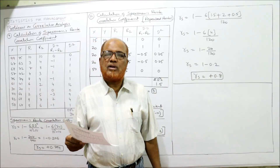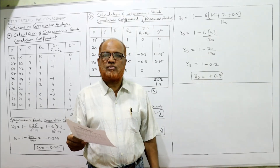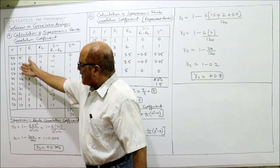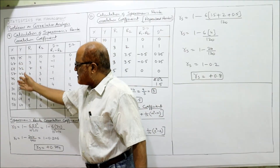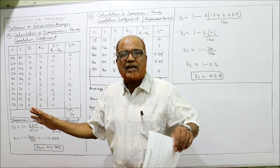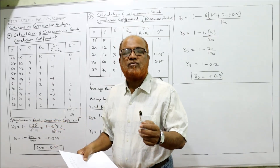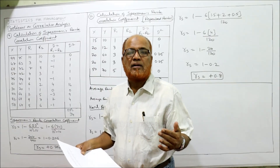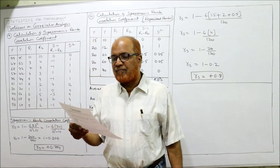But the new point is we have repeated ranks here. In the previous problem, every value was unique with no repetition. But in the tenth problem, some values are the same. X values are 15, 20, 20, 20, 50 and Y values are 10, 12, 60, 60, 70. So repeated ranks will occur and we need to modify the formula.